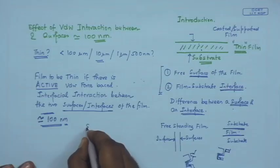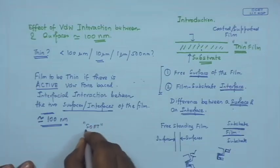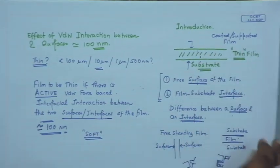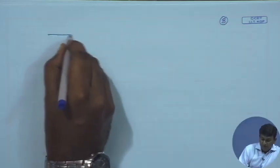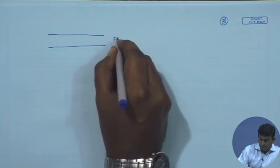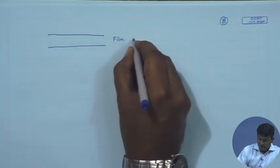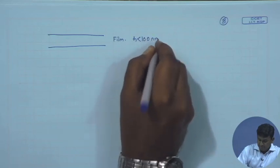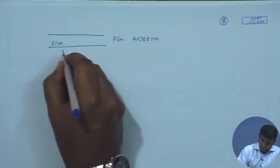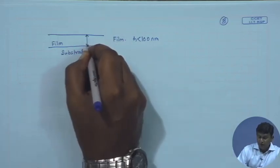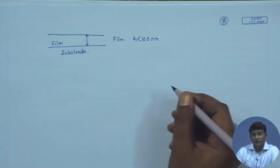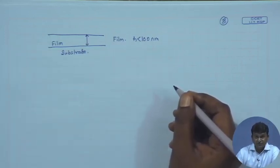We worry about it because of something embedded in the title of the course: the so-called 'soft.' If you have a film thinner than 100 nanometers, you now know there is active van der Waals interaction between the two interfaces. But how does it matter?